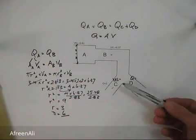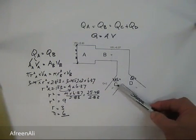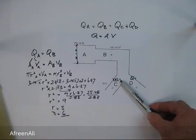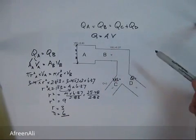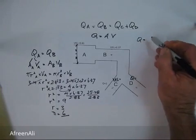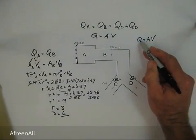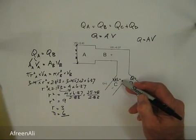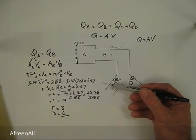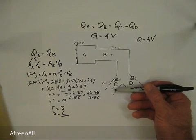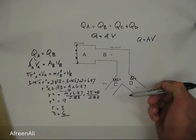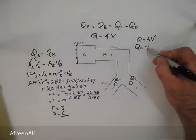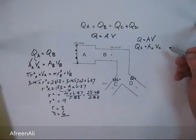The next piece of information to find is the velocity of the fluid flowing through pipe C. The formula to use is Q equals A times V: flow rate equals area of pipe times velocity. Velocity is what we're trying to find. We have the flow rate and the diameter of the pipe. So: the flow rate at C equals the area at C times the velocity at C.